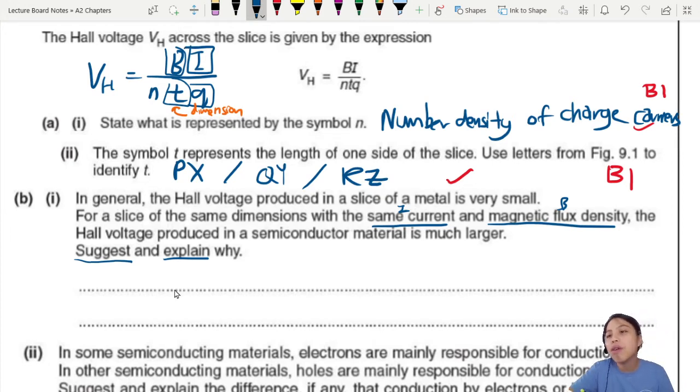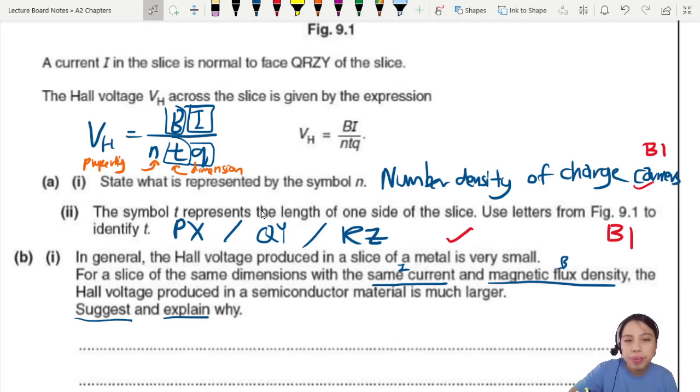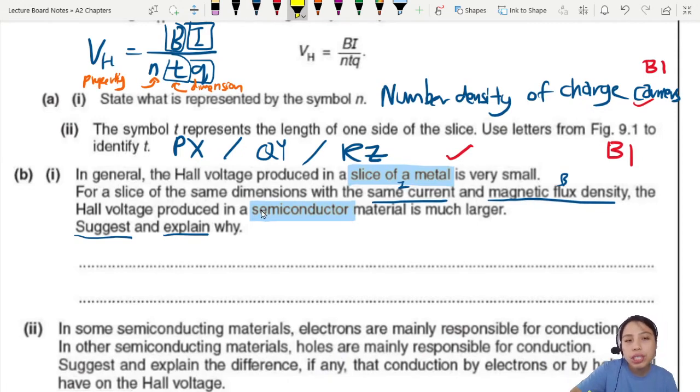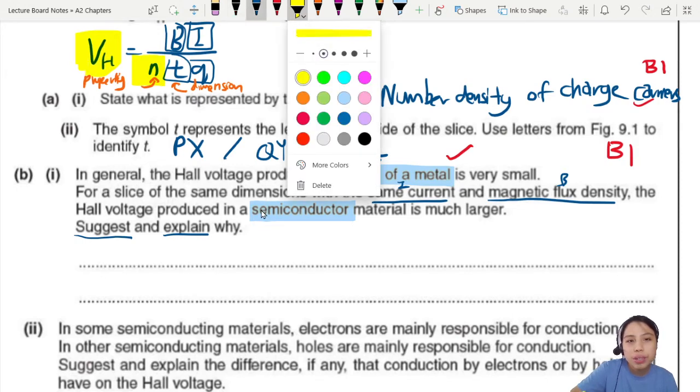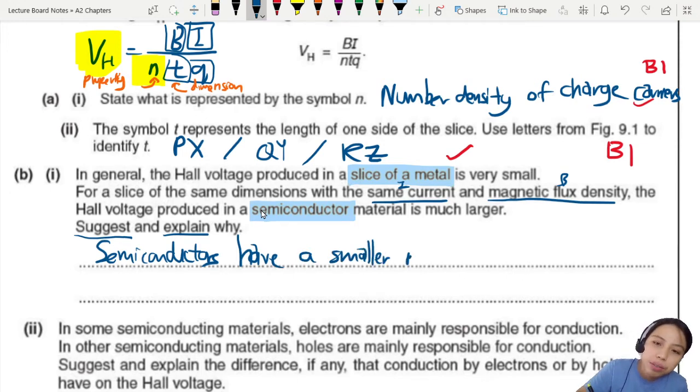So the only thing left is N. What is N? Number density of charge carrier. So this one is a property of material. The material itself. What is the slice made of? Material. So that is the main difference here. Semiconductor versus a slice of metal. Just a conductor. So we need to explain why. How to talk about N.